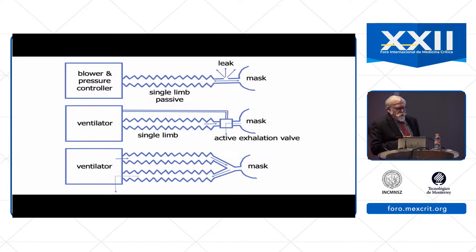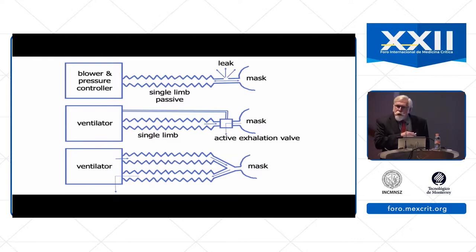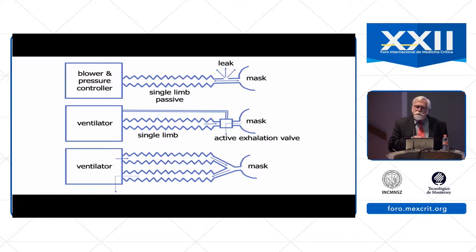If we look at the circuit used for non-invasive ventilation, there are fundamentally three types of different circuits that might be used. One might use a single limb passive circuit, as illustrated here. With this type of circuit and ventilator, it is important that there is a leak port incorporated into the circuit. That leak port can either be in the circuit near the mask, or in some applications, the leak port is within the mask itself.